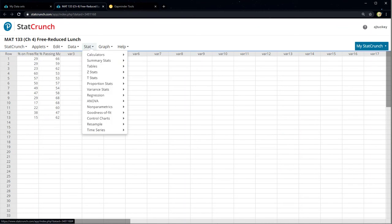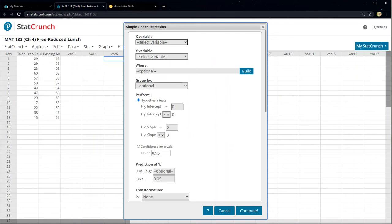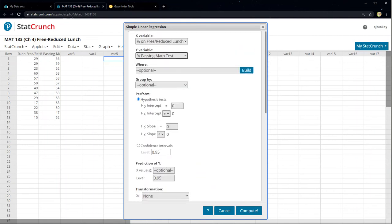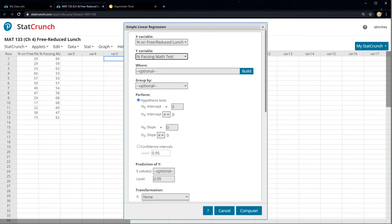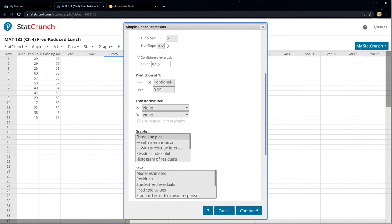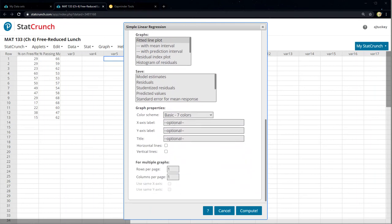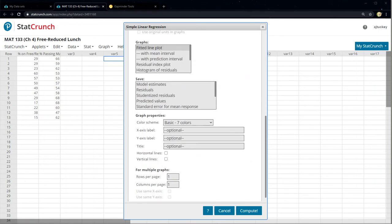So we want to go to Stat, and we want to go to Regression, and we want to choose Simple Linear Regression. So that's the way we're going to do this. So Stat, Regression was the arrow I went over on, Simple Linear, and I click on that. And then X, it wants to know the explanatory variable, which was the percent on free or reduced lunch. Y is the percent passing that math test.